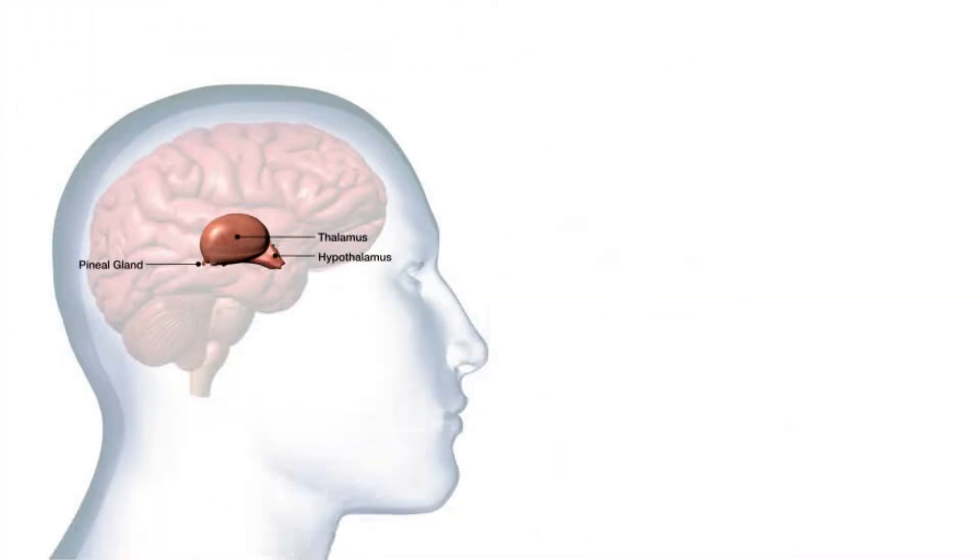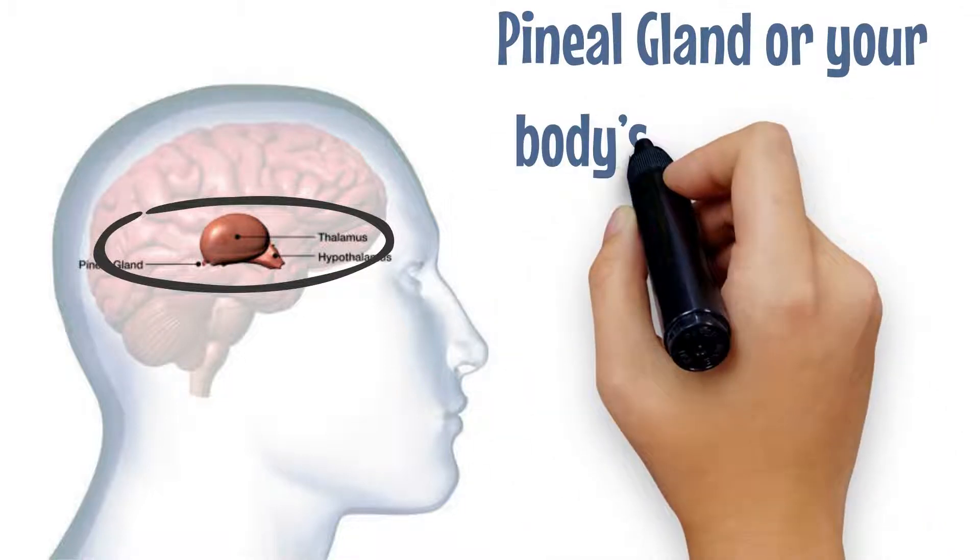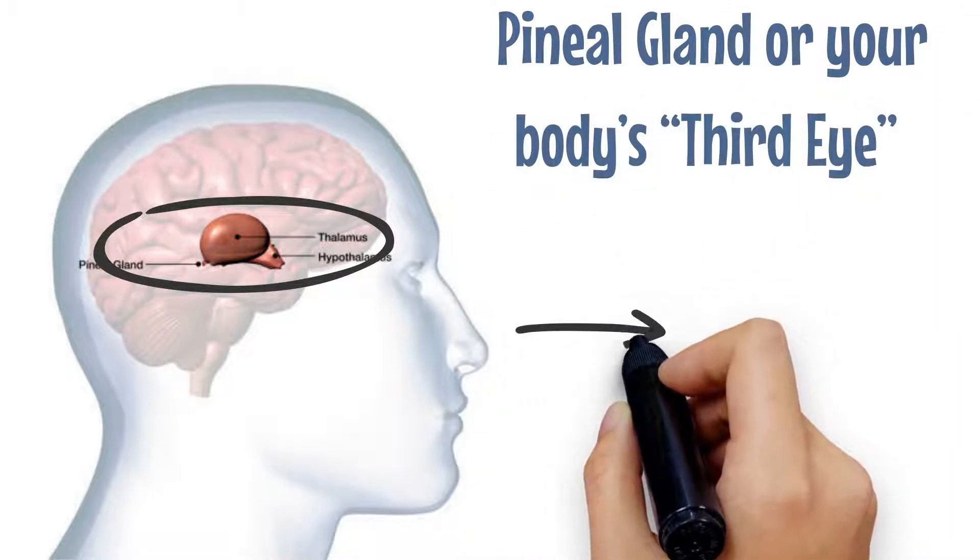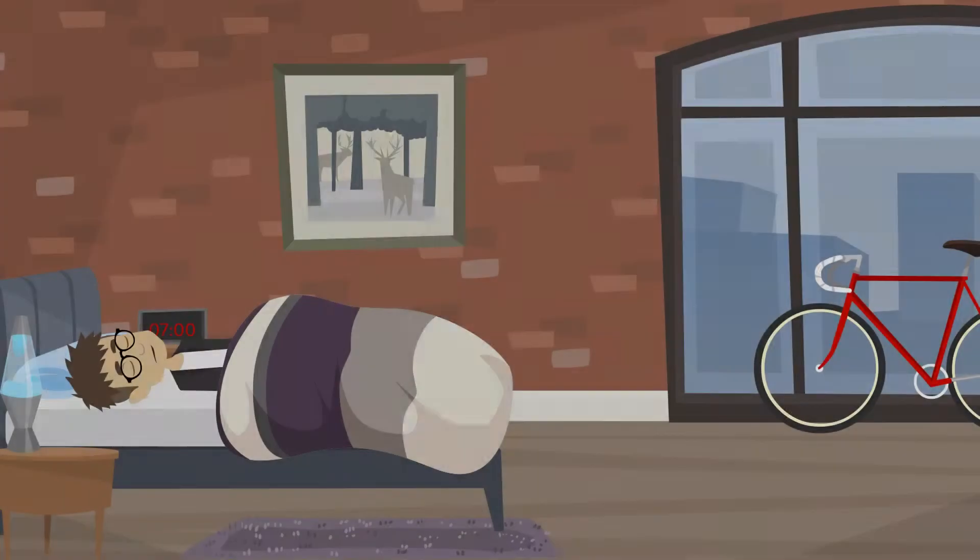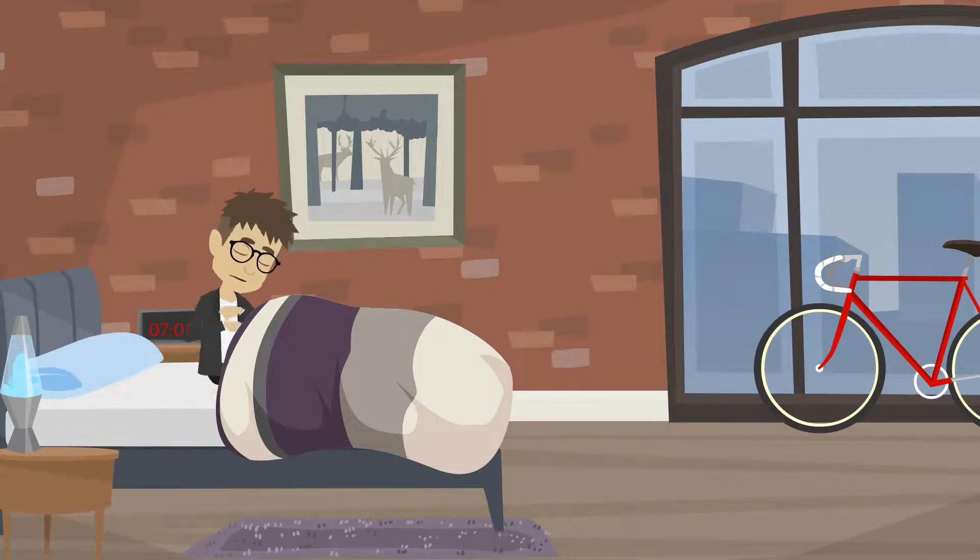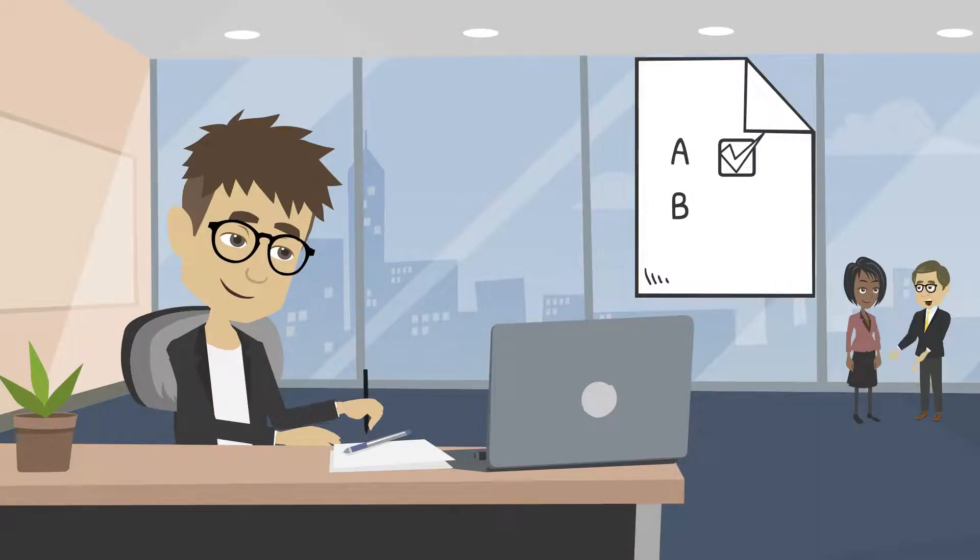Our brain has a tiny pinecone-shaped gland called the pineal gland or your body's third eye. While its size is comparable to a grain of rice, it plays a vital role in controlling your sleep patterns, how you perceive reality, and how you make decisions.